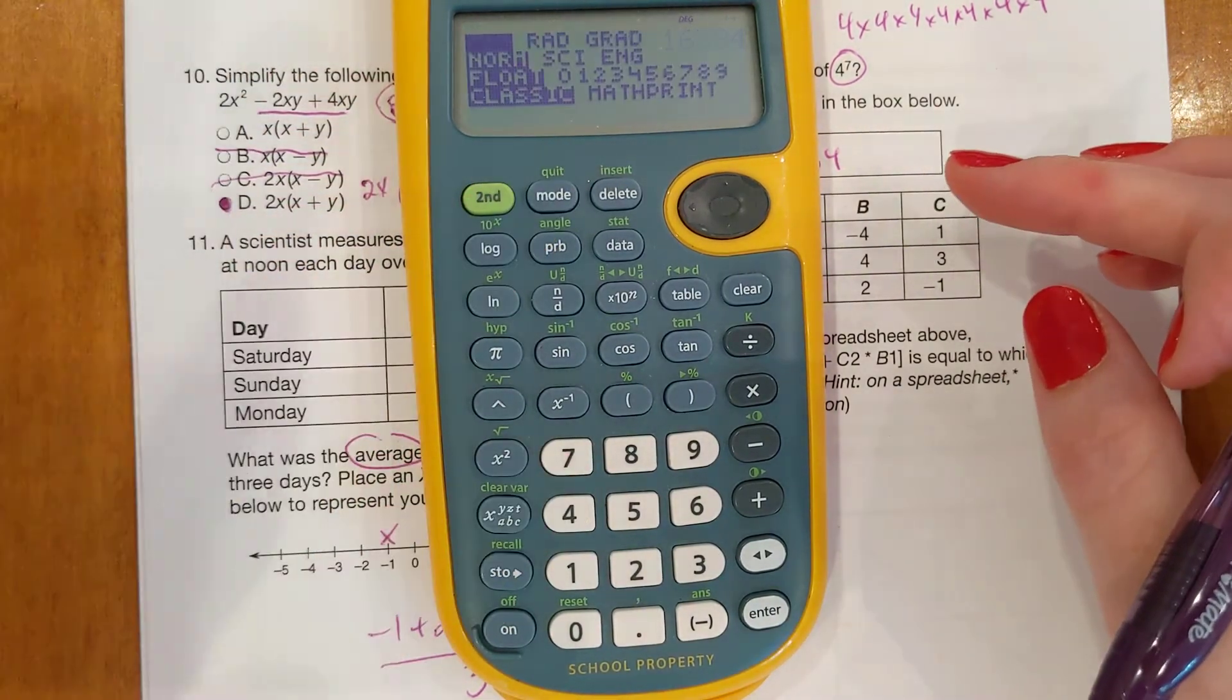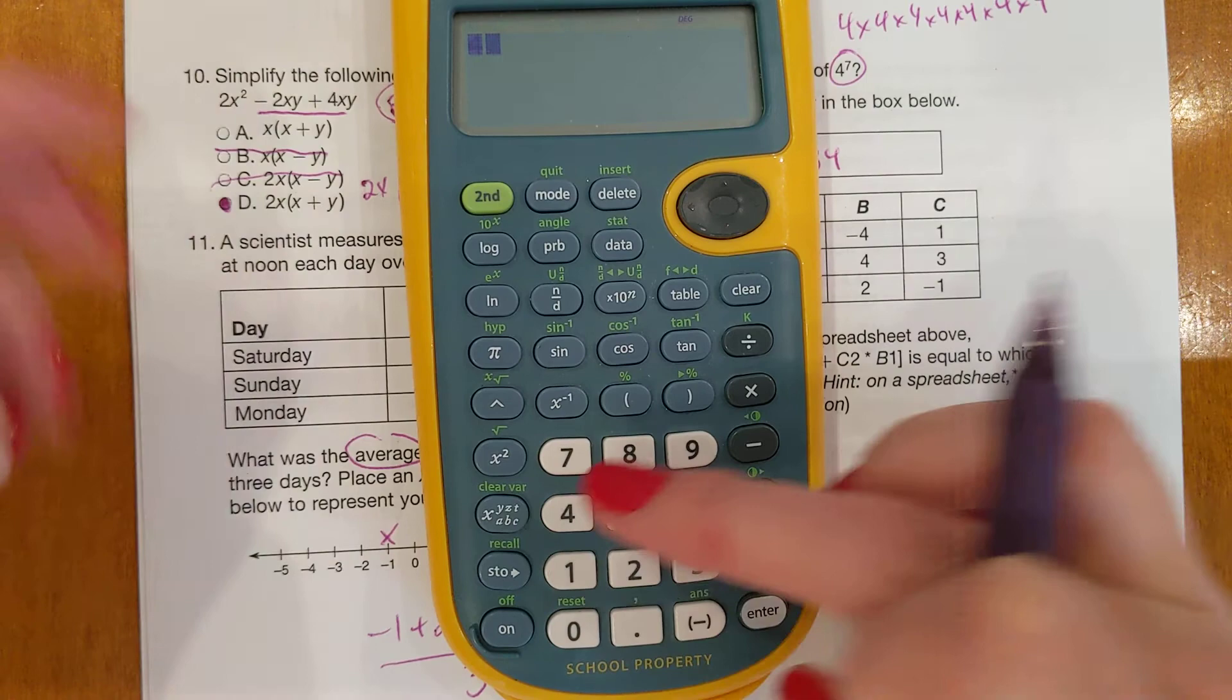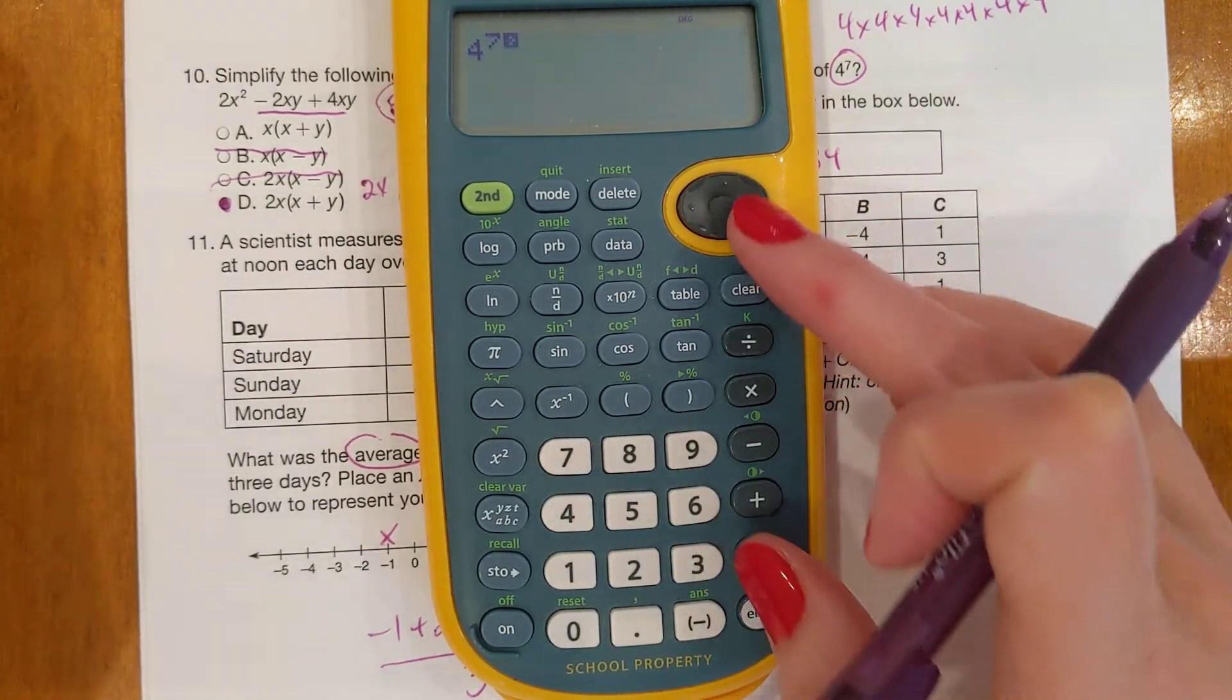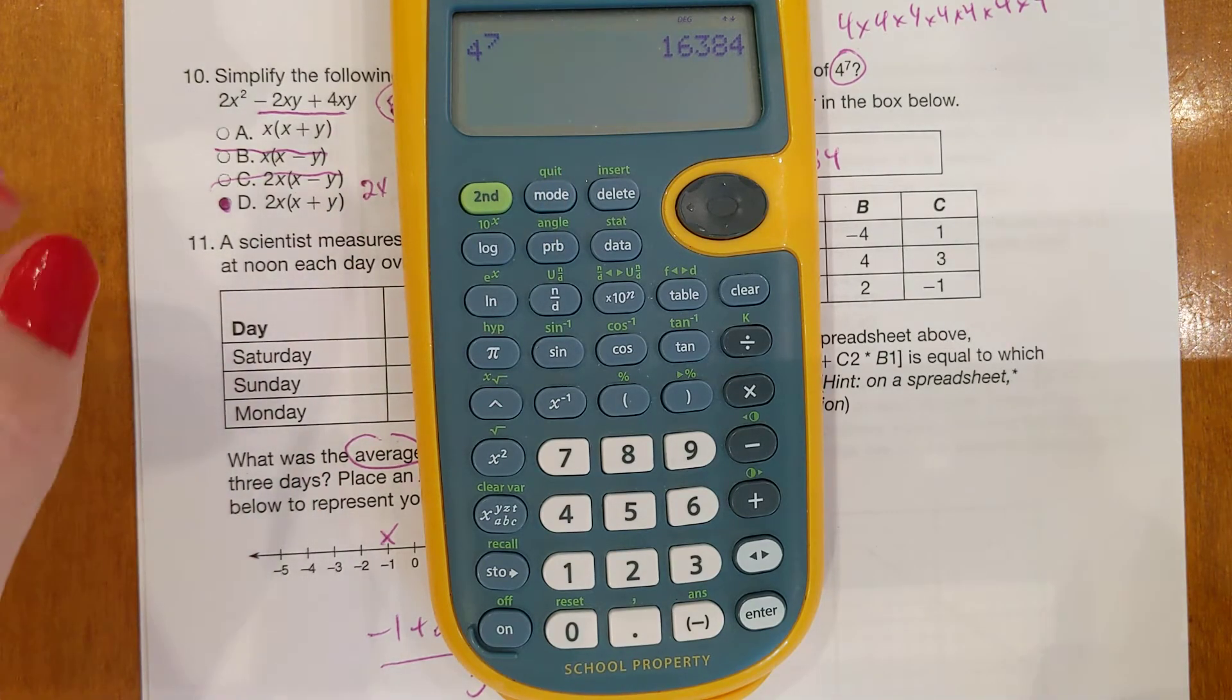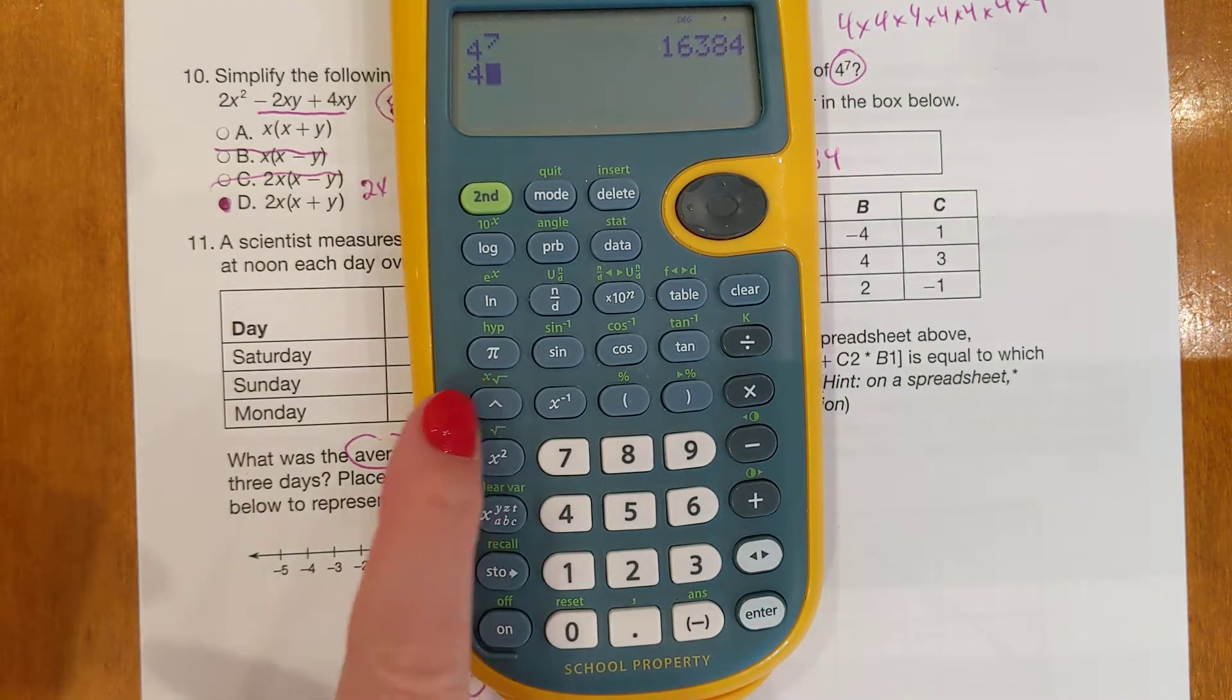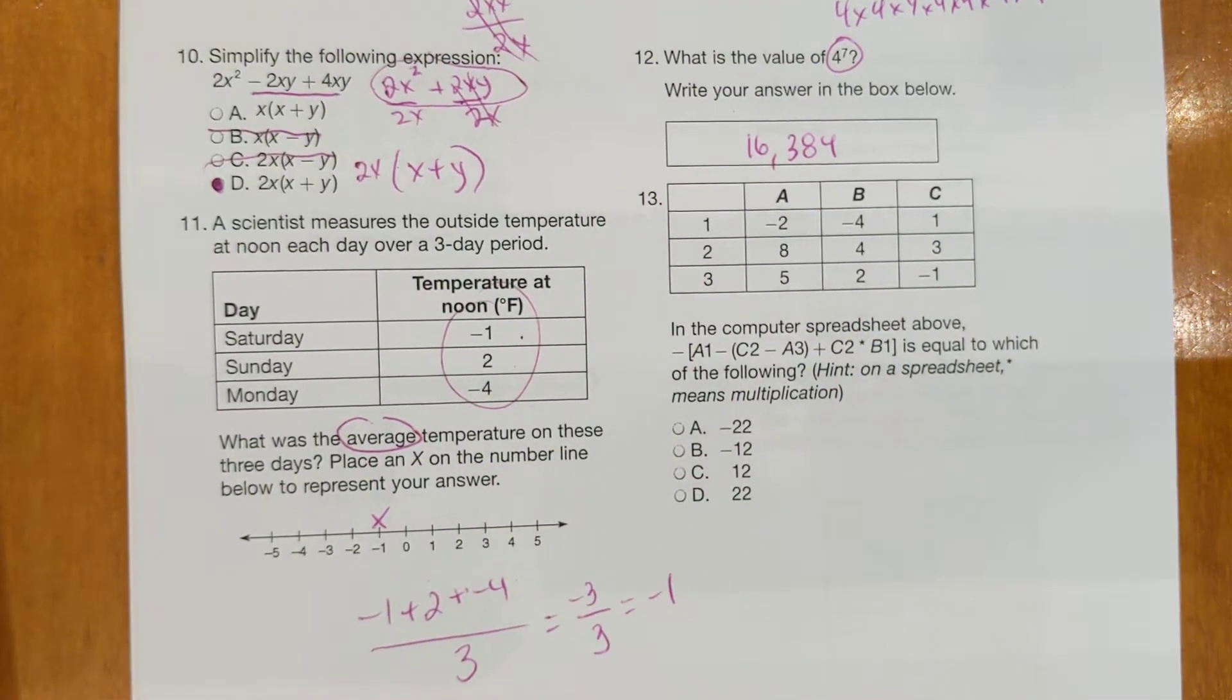I think my mode is on classic. It is. If it was in math print mode, it looks a little different when you do it. So 4 caret 7, it raises it up there for you. So math print and classic, they're both good modes. You can toggle between the two and use them both. But again, that's the only thing you're going to use mode for, to change it between classic and math print mode. Again, 4, and you want the caret key right up here, diagonal from the 7, caret 7.